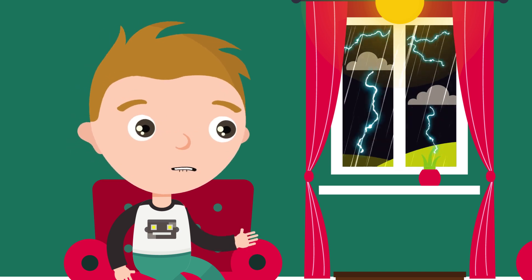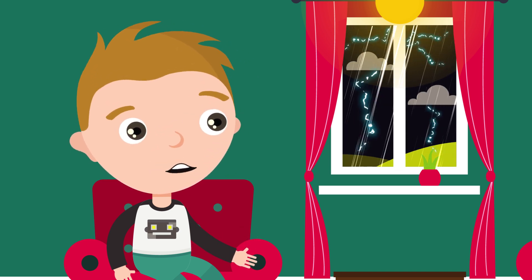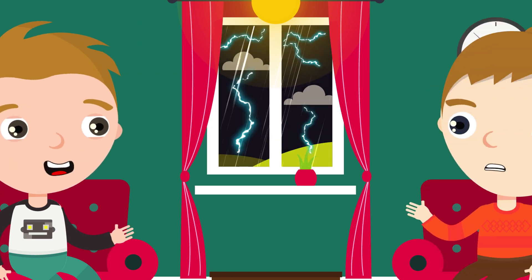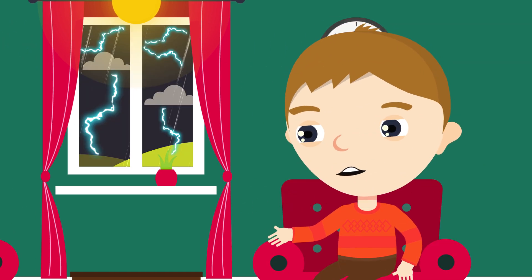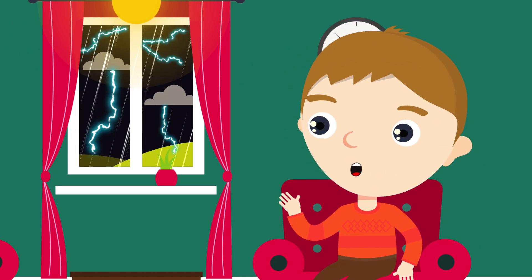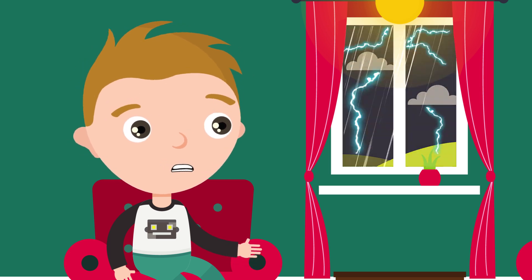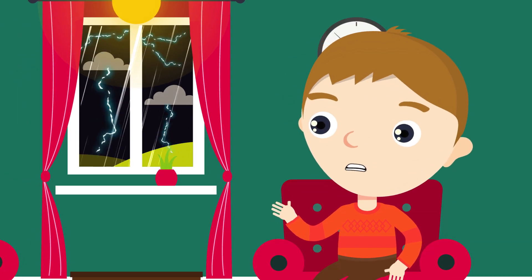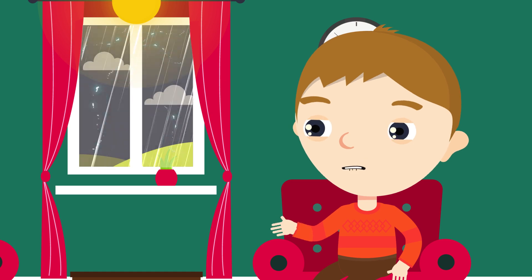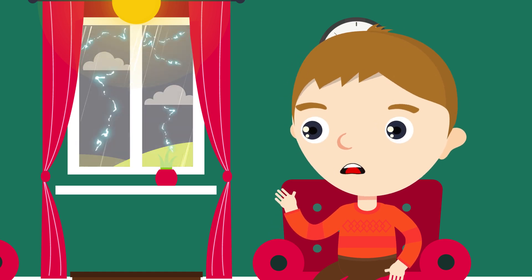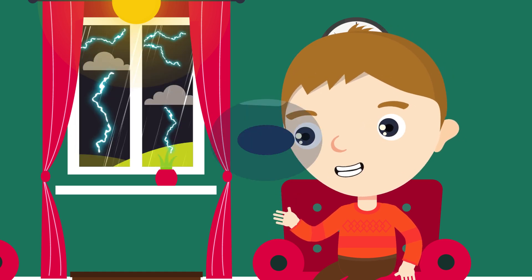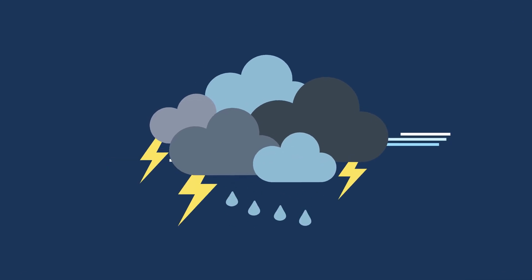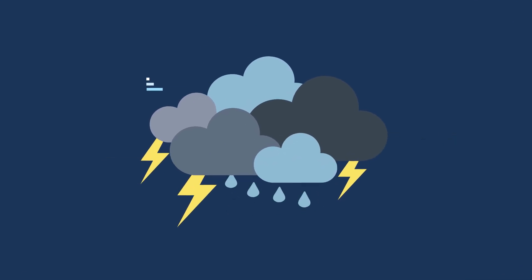Aaron, I'm frightened. What is all that noise outside? Don't worry, it's just a thunderstorm. What is a thunderstorm? A thunderstorm is a storm with lightning and thunder. It is produced by cumulonimbus clouds, usually producing gusty winds, heavy rain,